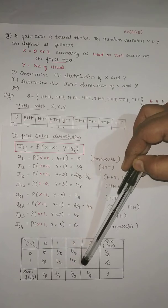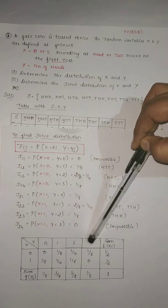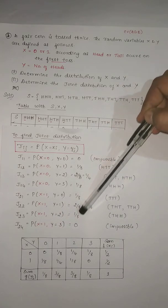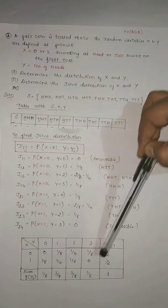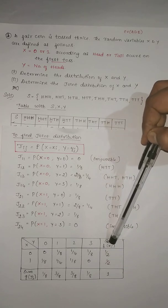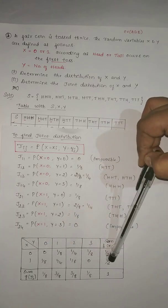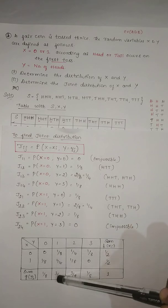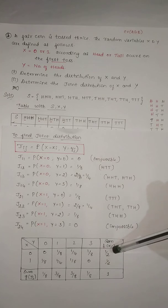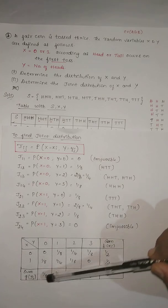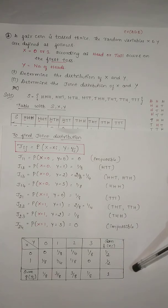After calculating all j_ij values, enter them into the joint probability distribution table with X values in rows and Y values in columns. Include the row sums giving f(x_i) and the column sums giving g(y_j). When you add the marginal values, the total sum must equal 1. This completes the joint distribution table for X and Y.